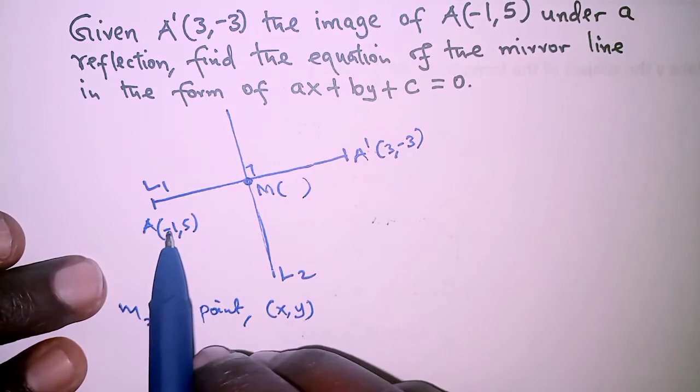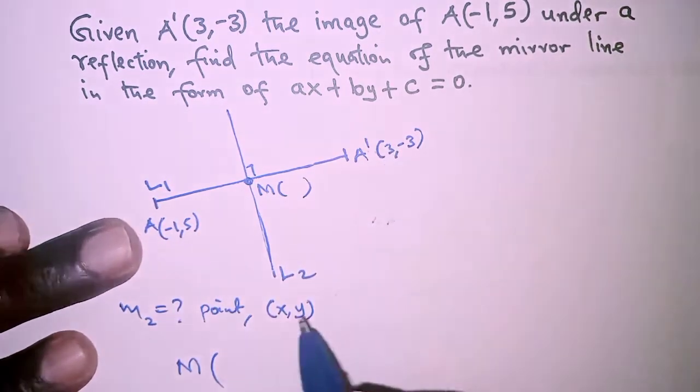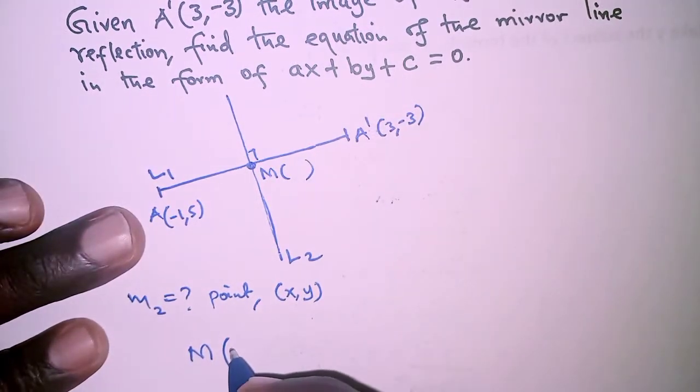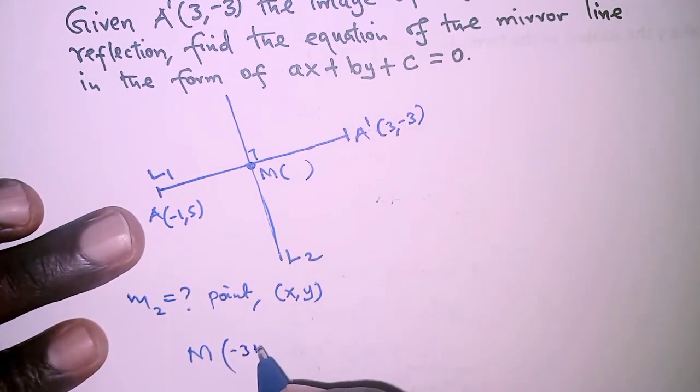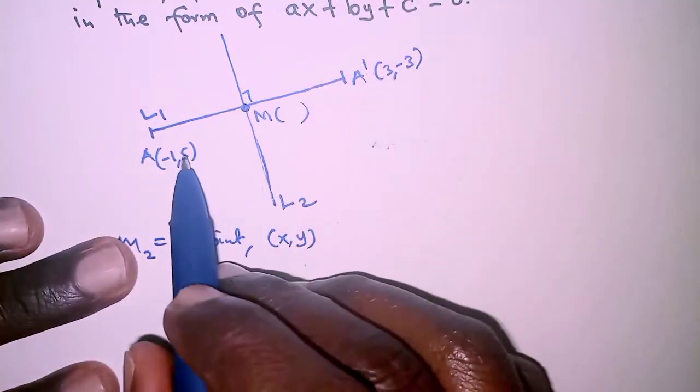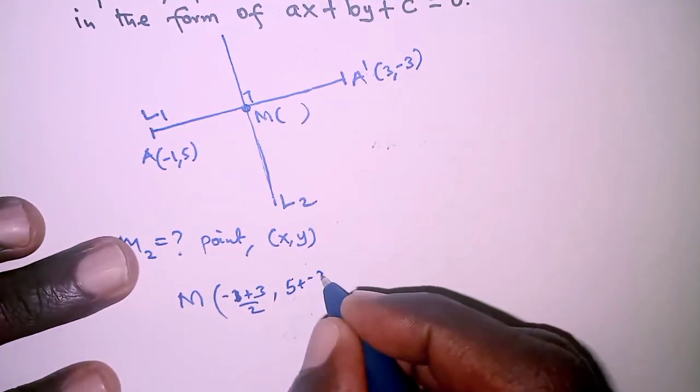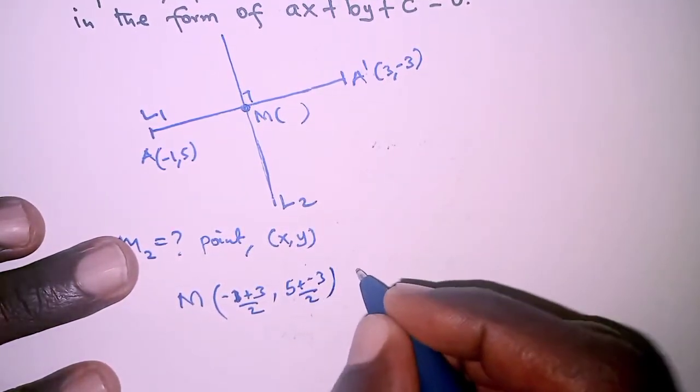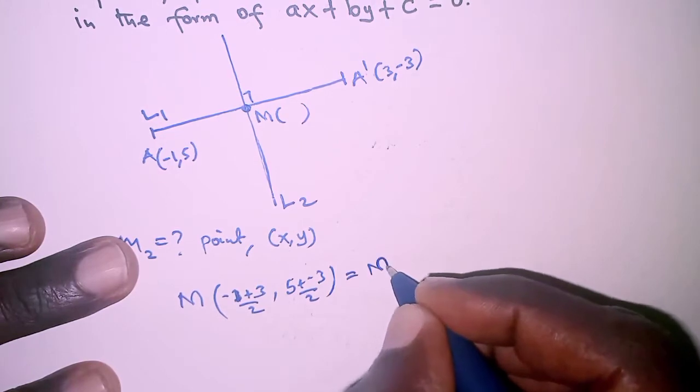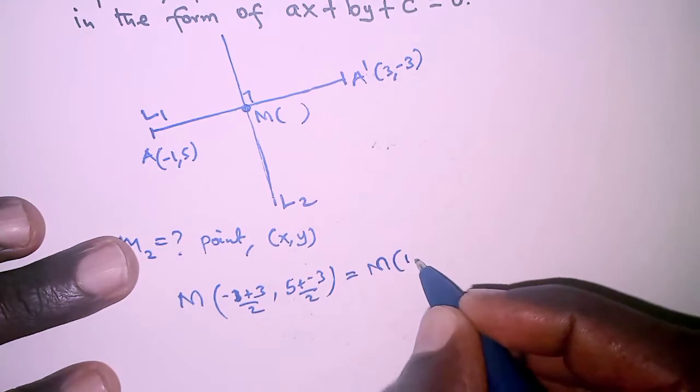The midpoint M is obtained by finding the average of the x coordinates: (-1 + 3)/2, and for the y coordinate we have (5 + (-3))/2. That means the coordinates of M is given as (2/2, 2/2) which is (1,1).